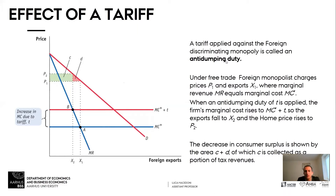Now suppose our home economy imposes a tariff T. This could be an anti-dumping duty — dumping, which we'll talk about later — where we say price P1 is too low, perhaps lower than average cost, and we consider this an unfair practice. So we impose a tariff T, and the marginal cost of the firm jumps from MC* to MC* plus T.